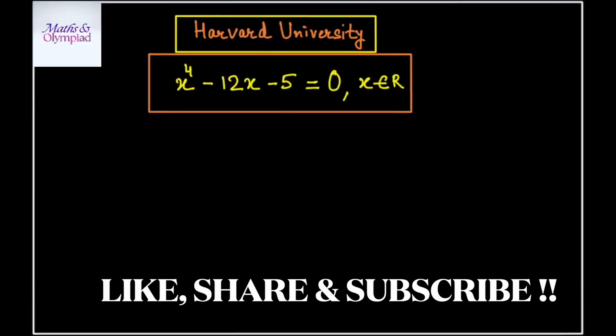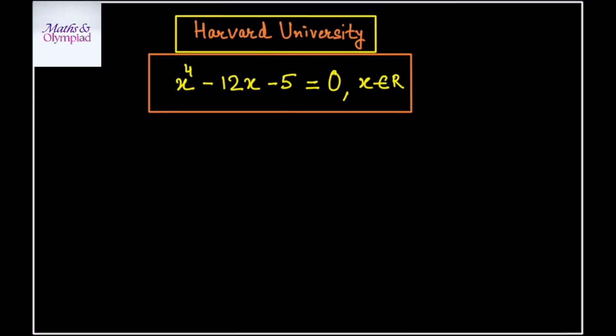Welcome back to my channel Maths and Olympiad. In this video, we are going to solve one of the trickiest algebra questions from Harvard University. It says x raised to the power 4 minus 12x minus 5 equal to 0. Here x belongs to a real number, therefore we will reject all complex solutions. Let's get started without any further delay.